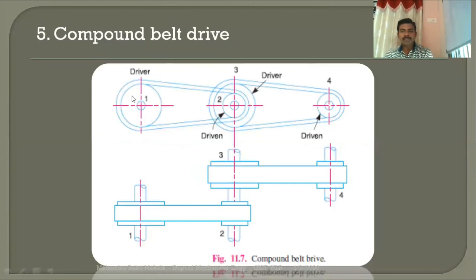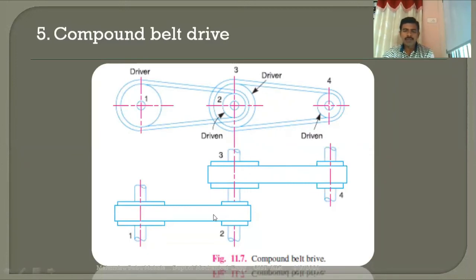The fifth type is the compound belt drive, which consists of more than two pulleys. Apart from the driving and driven pulleys, there are intermediate pulleys on an intermediate shaft. Power transmission takes place from the driving end to the driven end via this intermediate shaft, which has two pulleys — one acting as a driver and one as driven. Essentially, two open belt drives are combined to form a compound belt drive, which gives a larger speed reduction ratio.